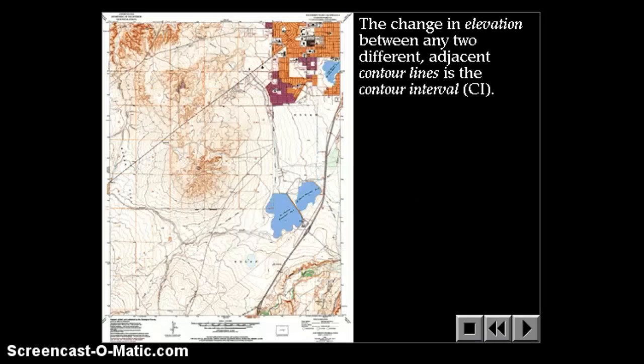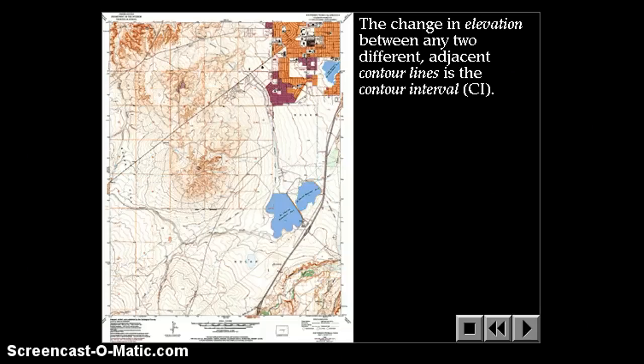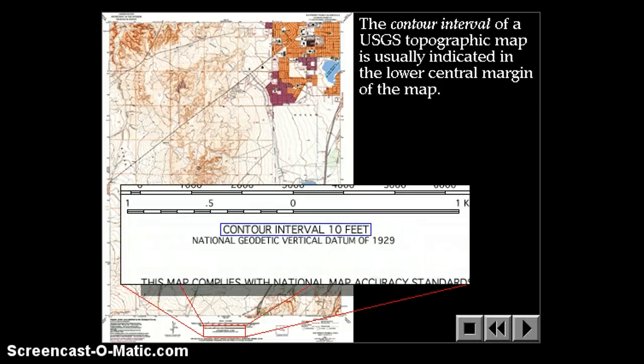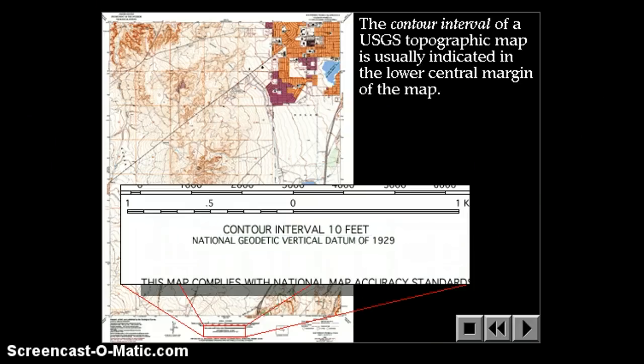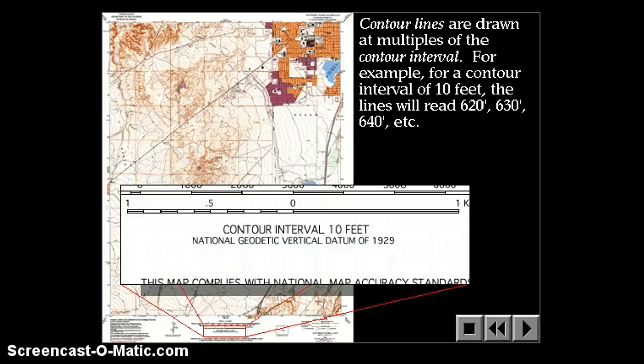The change in elevation between any two different adjacent contour lines is called the contour interval. The contour interval is found in the bottom center of a topographic map from the USGS, usually right underneath the scale. So this map has a contour interval of 10 feet. The contour lines are drawn at multiples of the contour interval. So if the contour interval is 10 feet, that means there's 10 feet elevation change between each adjacent contour line. So they might be 620, 630, 640, etc.